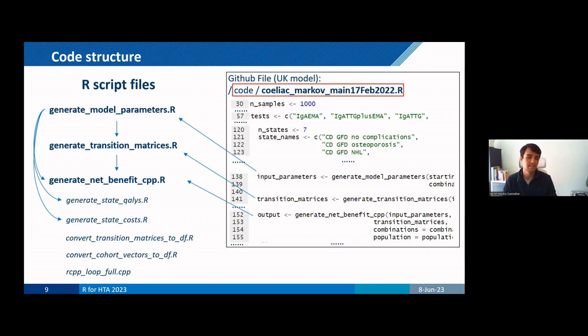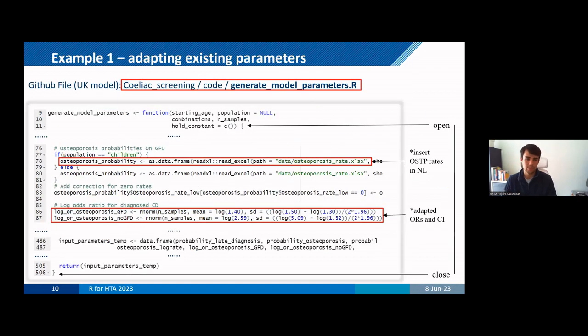But in general, this diagram shows how the different R scripts will be relevant depending on the adaptations that you might need to make. So in this context, the easiest type of adaptation that you could make assuming that you're happy with a particular model is simply updating an existing parameter. So that's actually my first example where here we go to the model parameters script. And here I show how we changed the general population rates and the increased risk of developing osteoporosis for diagnosed and undiagnosed cases. So this R script defines a function that in the end will return a large data frame with all the model parameters that we generate. So in this case, in line 78,